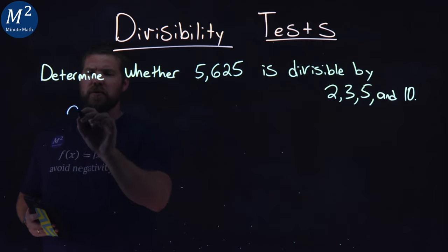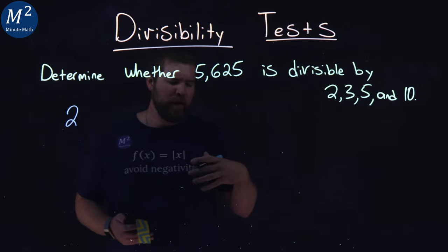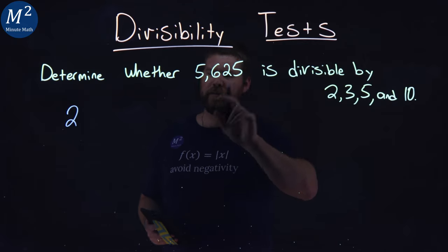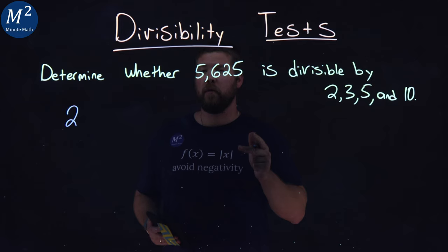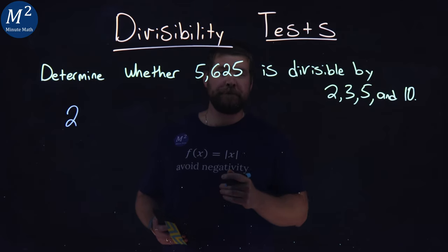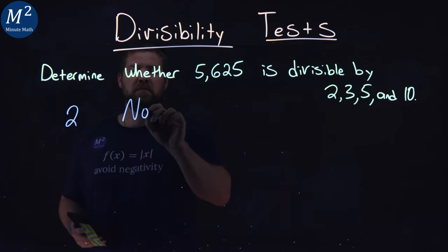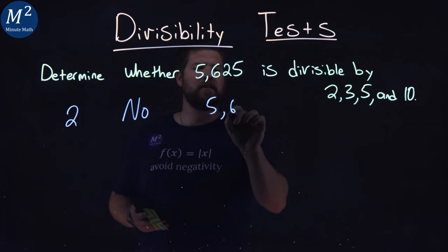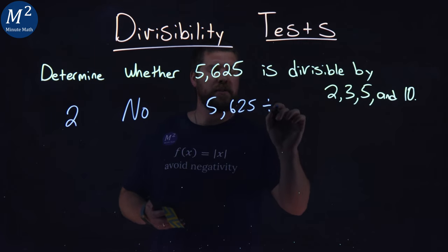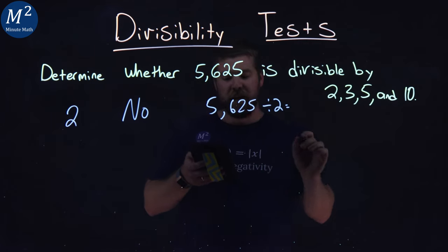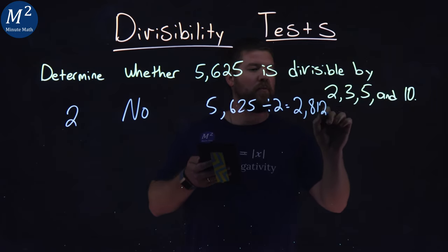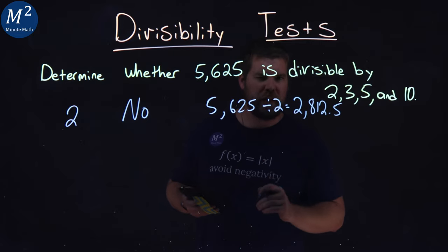Let's first start with 2. To determine if a number is divisible by 2, we look at the last digit, the ones place. Is it a 0, 2, 4, 6, or 8? It's not. It's a 5. And so in that case, no. It's not divisible by 2 because 5,625 divided by 2, using my little cheat sheet here, is 2,812.5.